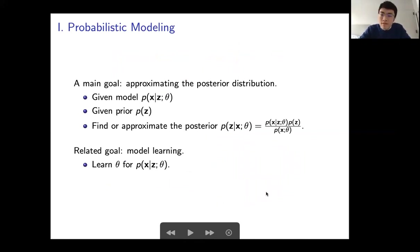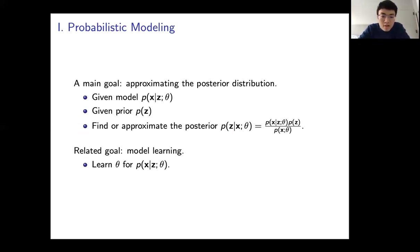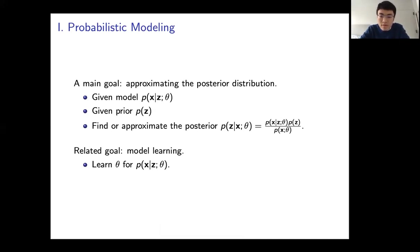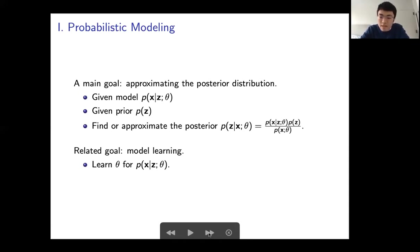Our main goal in probabilistic modeling is to approximate the posterior distribution — the distribution of the latent variables given data. We first know the model and the prior; the model can be parameterized by learnable parameters theta. The denominator requires an intractable integration, which is why this cannot be solved analytically for complex models, so we resort to approximate inference. A related goal is model learning — finding the parameters theta for the likelihood model.